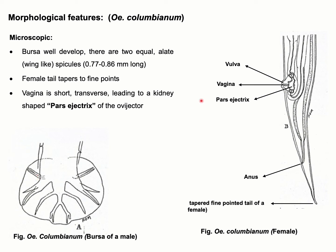For the female, the tail tapers to a fine point, as indicated here. The vagina is short and transverse, leading to a kidney-shaped pars ejectrix of the ovejector, as you can see here.